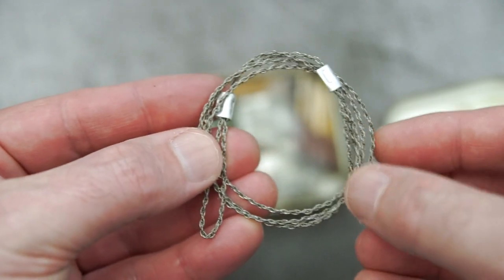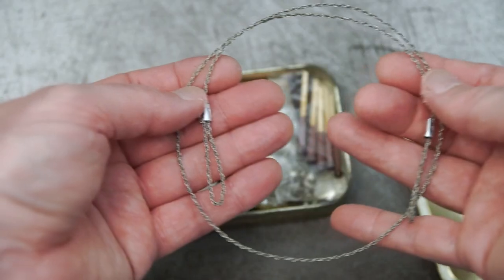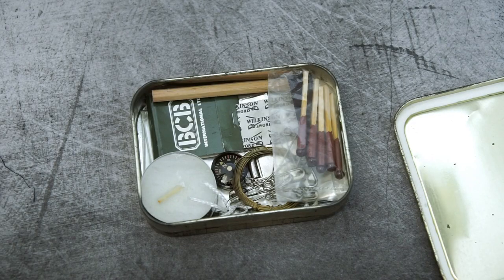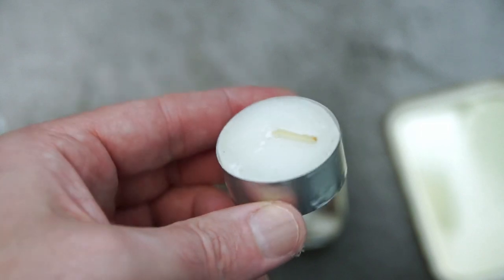This wire saw is very useful and it's quite long. What you do is you can put some twigs through either side and saw through things. So that's something which is really useful to have.